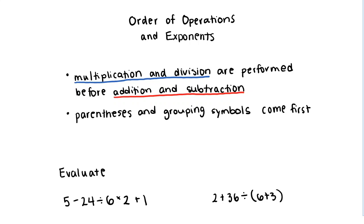And within these two groups — multiplication and division — if I see both of these appear in one expression, we perform that multiplication and division from left to right within the expression. And the same is true for addition and subtraction. If I see multiple examples of addition and subtraction within an expression, we evaluate those from left to right.